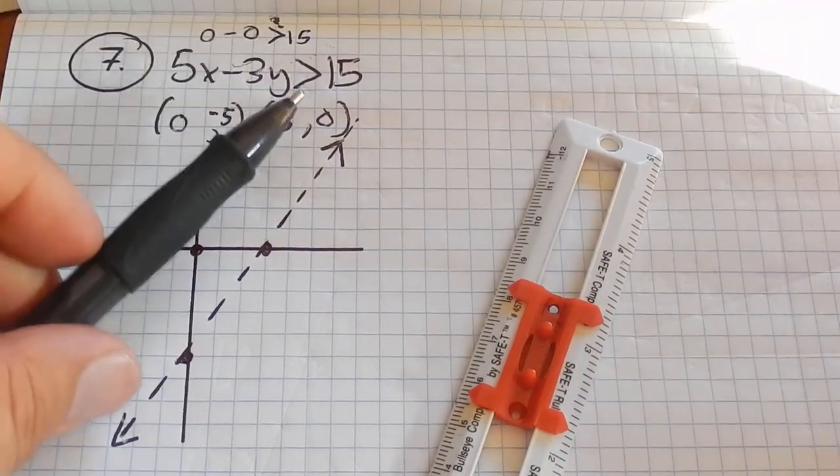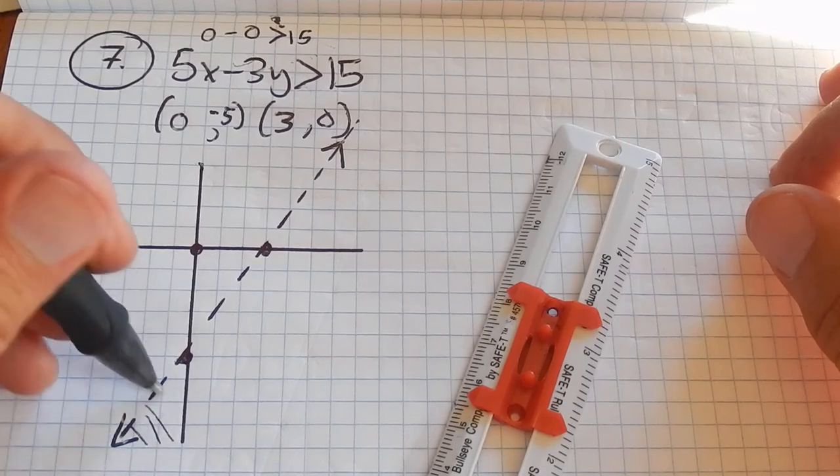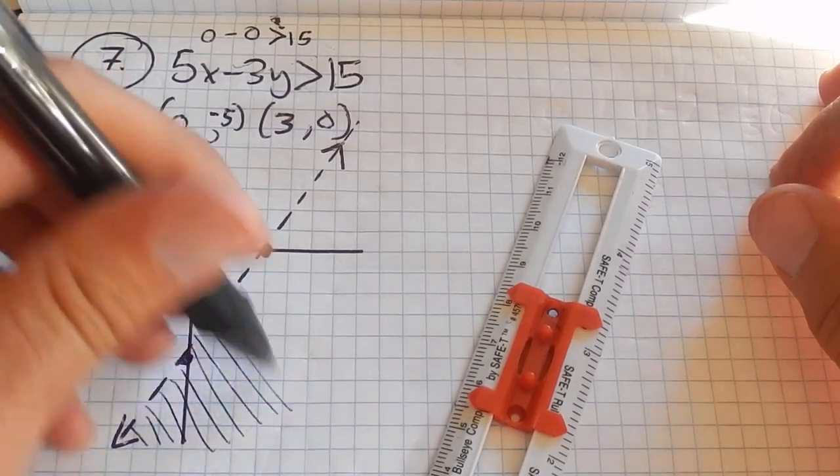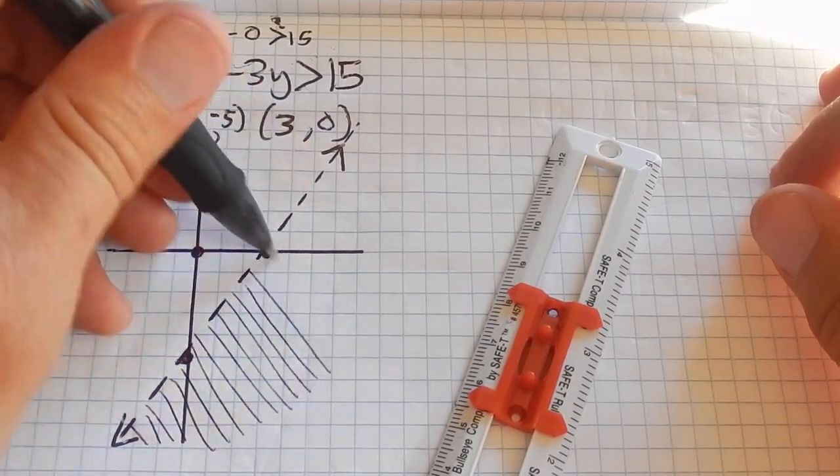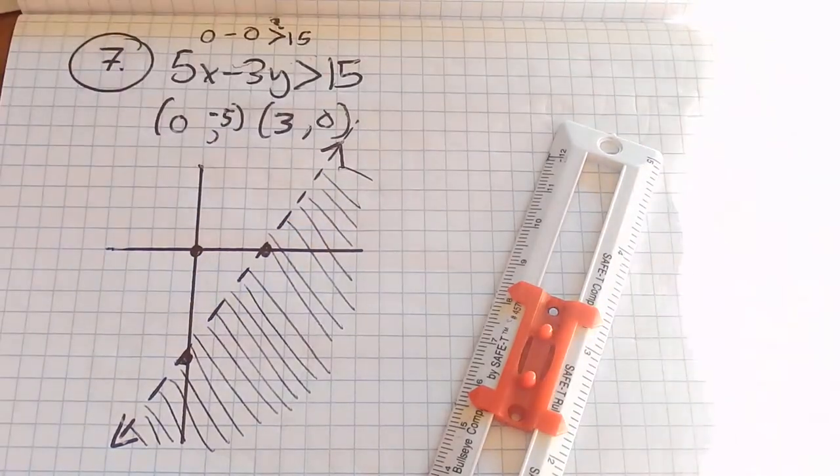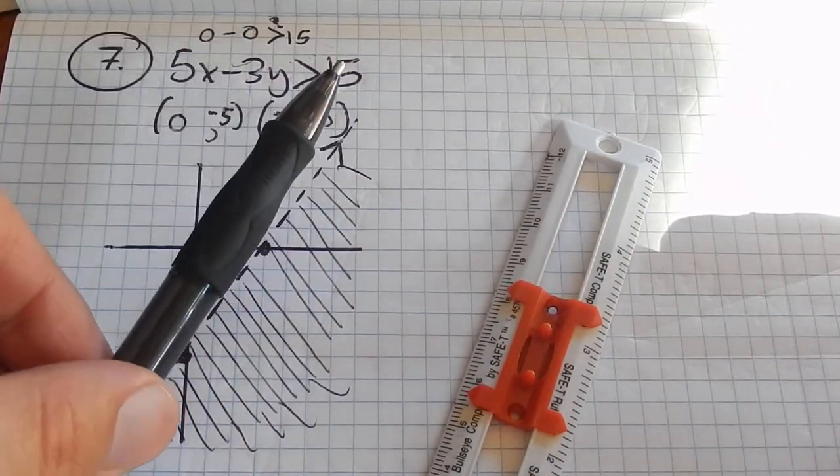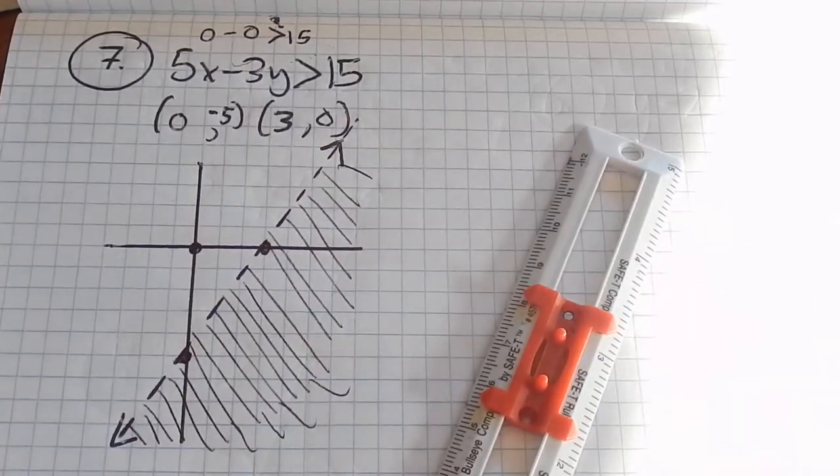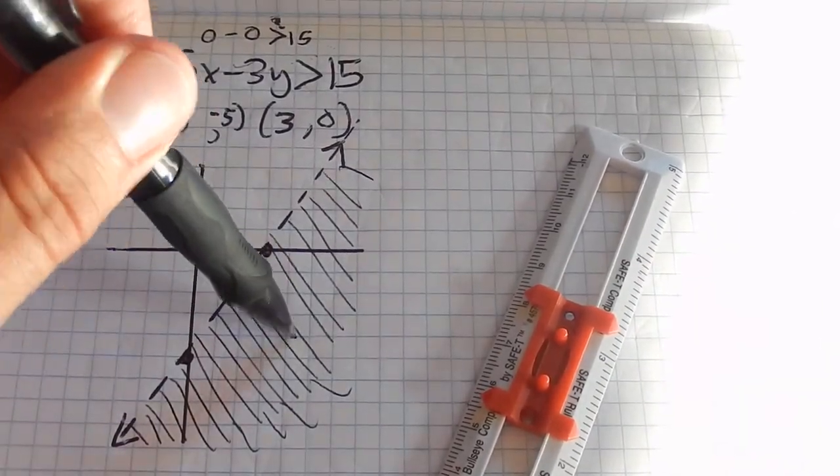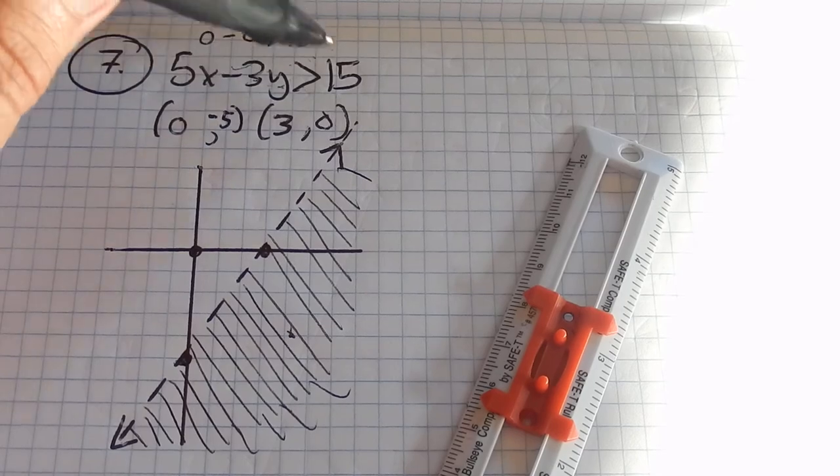That means that everything on the same side of (0, 0) doesn't work. So all the points that make that equation true are on the other side of the line. Everything below that line. I split the plane in two pieces and I shaded the part that makes this true. Any point I pick out of here, plug it in, this side will be greater than that side.